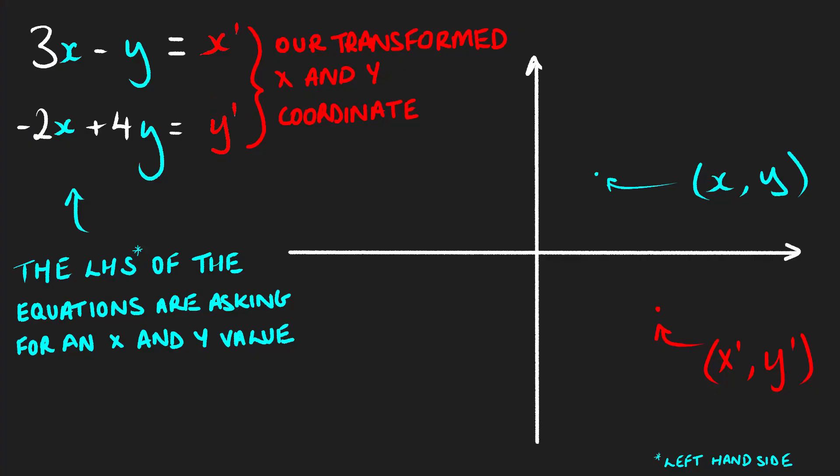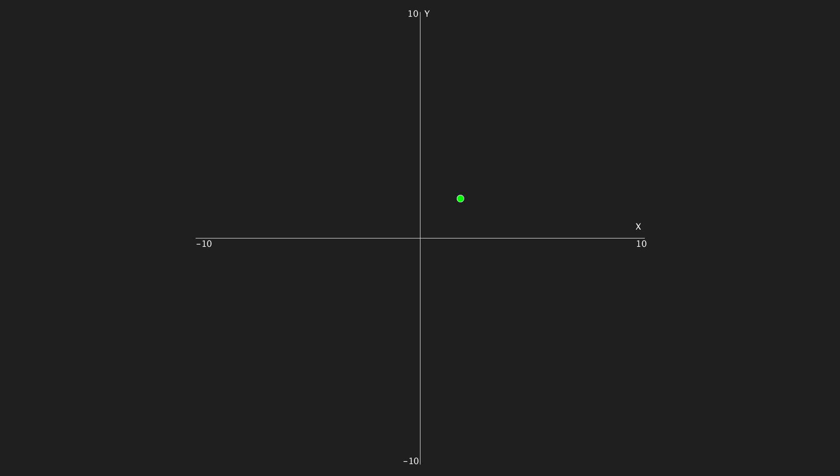Because instead of thinking of two lines, we can think of the fact that the left hand side of the equations are asking for an x and y value. So why not give it an x and y value and see what it gives back. Let's start off with our 2D plane.